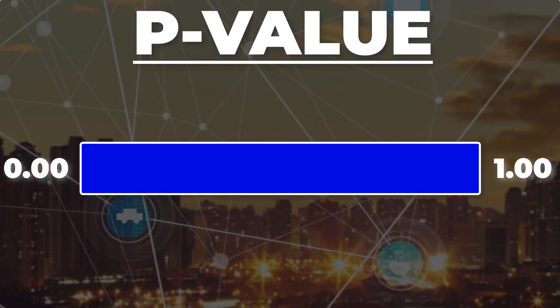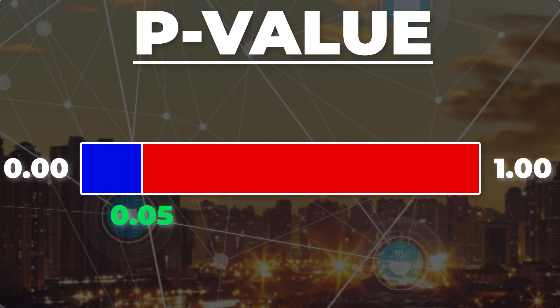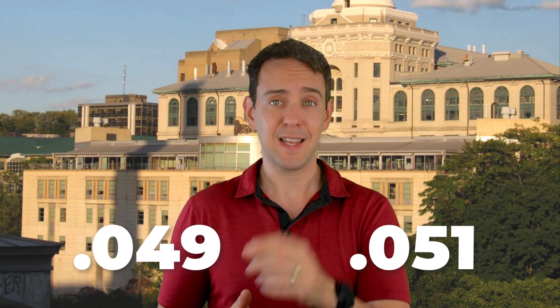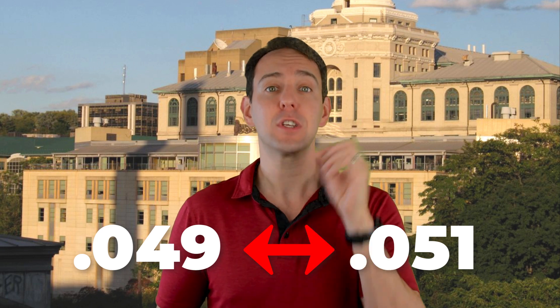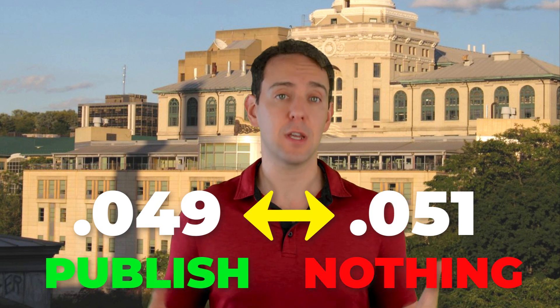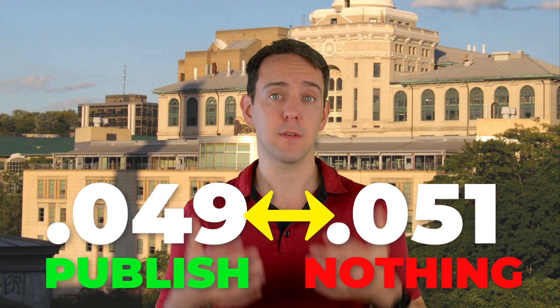It all comes down to what bad researchers are trying to accomplish. Remember, if a statistical result has a p-value above 0.05, then researchers can't easily publish their results. But if it is below 0.05, even by a little bit, they can. What that means is that if people are p-hacking, we'd expect to see an unusually high number of reported statistical tests with p-values just below 0.05. If researchers are 100% honest and no one is p-hacking, we'd expect to find just as many p-values of 0.049 as we would of 0.051 — that tiny difference is totally meaningless from a scientific standpoint, but hugely meaningful from the standpoint of whether researchers can publish or not.